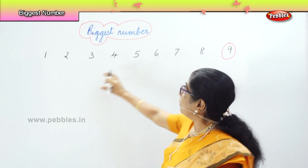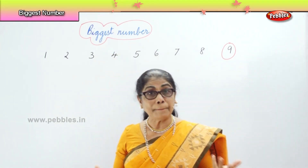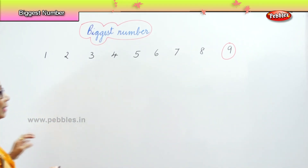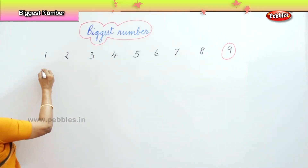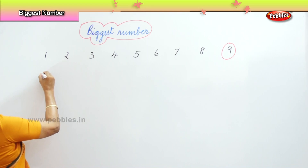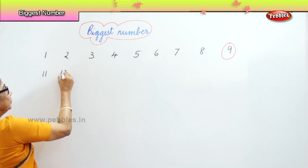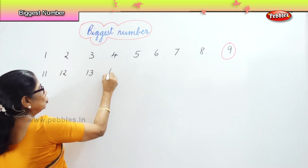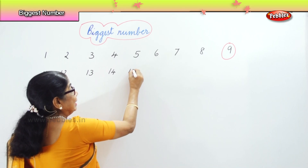Now we have two numbers together. When we say ten, then we have eleven, then twelve, thirteen, fourteen, fifteen.